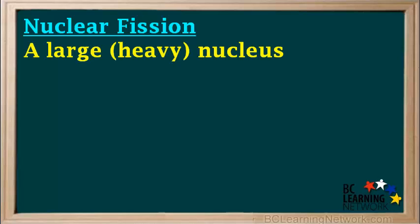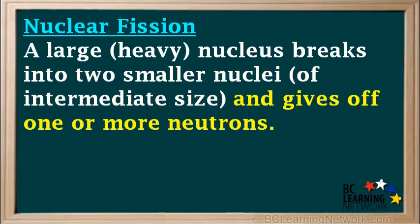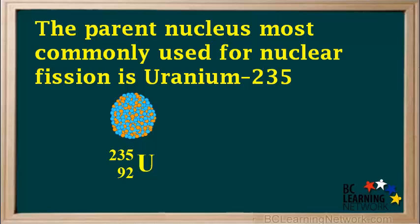In nuclear fission, a large or heavy nucleus breaks into smaller nuclei of intermediate size and gives off one or more neutrons. This process also releases a large amount of energy. The parent nucleus most commonly used for nuclear fission is uranium-235.